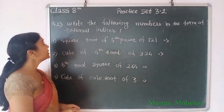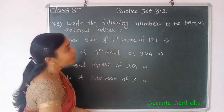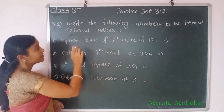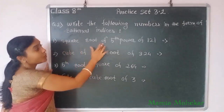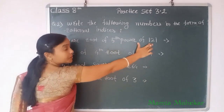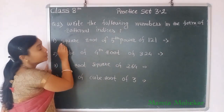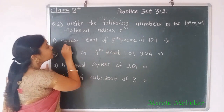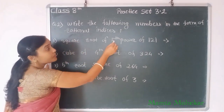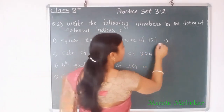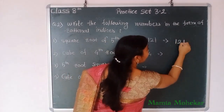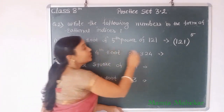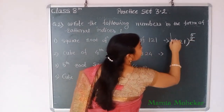Now we see question number 2: Write the following numbers in the form of rational indices. They give us expressions in words and we write them as rational indices. First: square root of 5th power of 121. We know the root goes in the denominator and the power goes in the numerator. Square root means 2, 5th power means 5. So we write: 121 to the power 5 by 2. This is our answer.